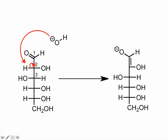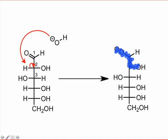Loss of a proton from this position, under strongly basic conditions, produces a planar enolate anion. This enolate is notable not just because it's planar, but also because it's what we might call an enediolate. There are two oxygen atoms attached to the double bond.